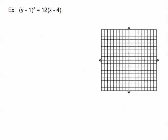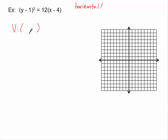Let's look at this one in detail with numbers. The first thing I notice is that only one term is being squared — all three other conic sections have both variables squared — so this is a parabola. The y is being squared, so it's a horizontal parabola. Let's find the vertex. We have to be careful: h is coming from the x quantity, which is 4, and k is coming from the y quantity, which is 1. So the vertex is (4, 1).